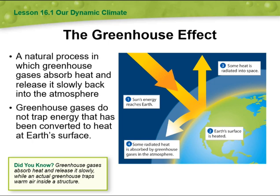The Greenhouse Effect is a natural process in which greenhouse gases absorb heat and release it back into the atmosphere. Greenhouse gases do not trap energy that has been converted to heat at Earth's surface. As you can see from the figure, sun energy reaches the Earth, Earth's surface is heated, then some of the heat is radiated back into space, and some radiated heat is absorbed by greenhouse gases in the atmosphere.